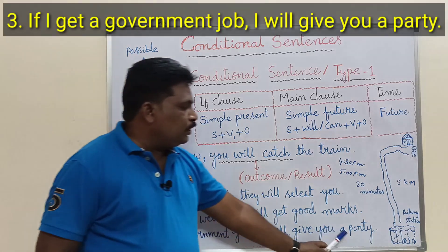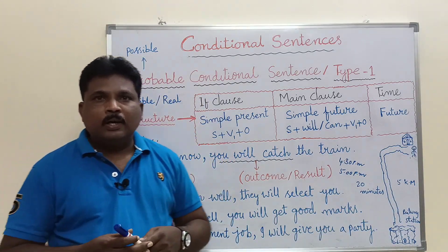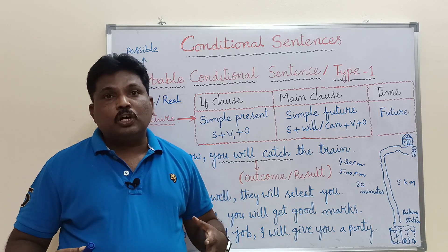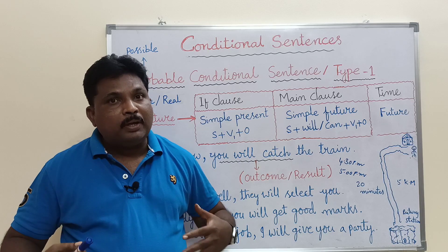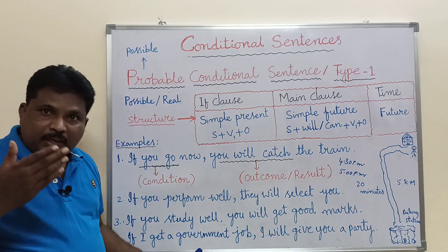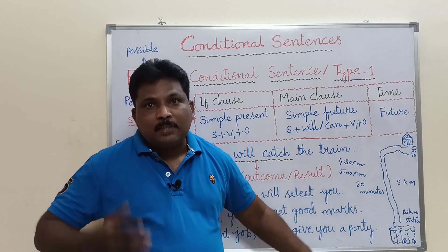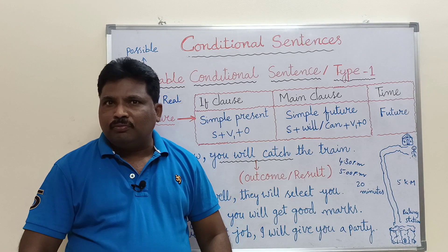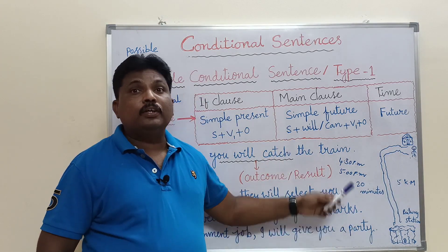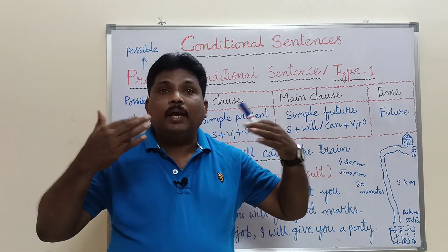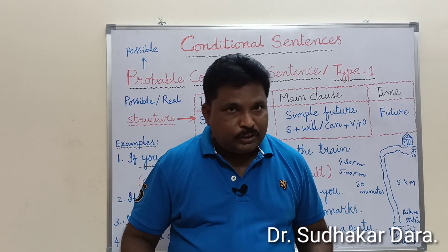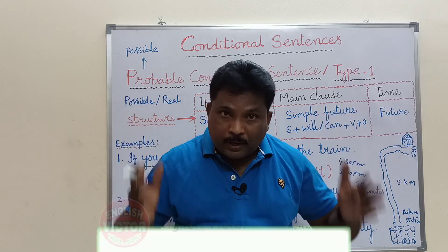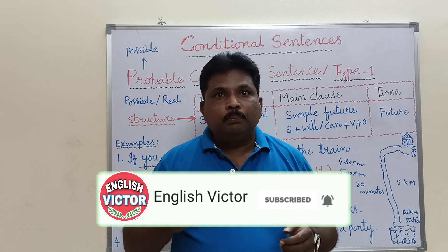Another example: 'If I get a government job, I will give you a party.' As the speaker, I am hopeful, confident, and sure that I may get the job. So there is a probability — if it happens, I will give a party. Remember, in all these examples, if the condition in the if-clause is fulfilled, the result will be seen at a future time. The actions are more likely to happen — that is why it is called a probable conditional sentence, meaning a possible or real action.